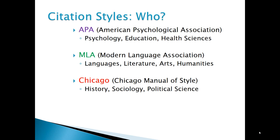For this reason, it is important that you learn to use the current edition for your program that specifies how to cite and use materials in all formats available. In 2020, APA published the 7th edition of their style. In May 2016, MLA released the 8th edition of their handbook. And in 2017, the 17th edition of the Chicago Manual of Style was published.